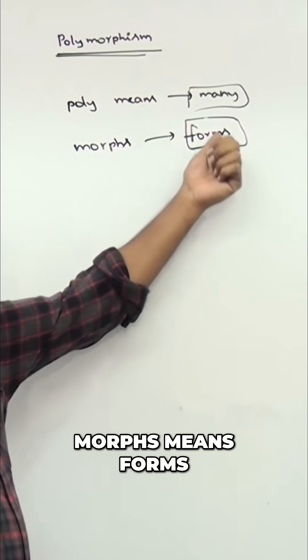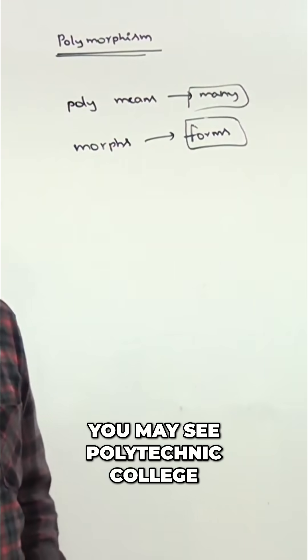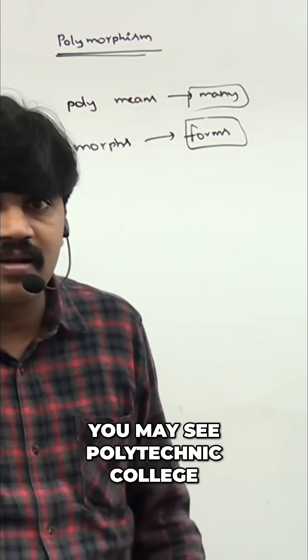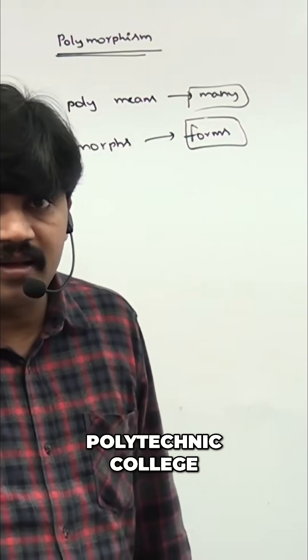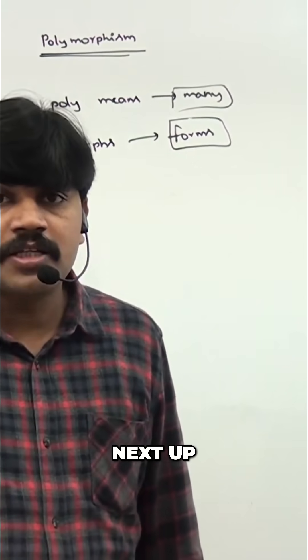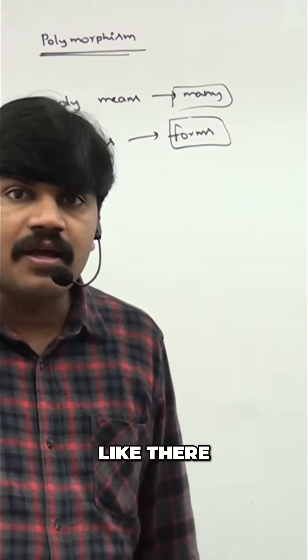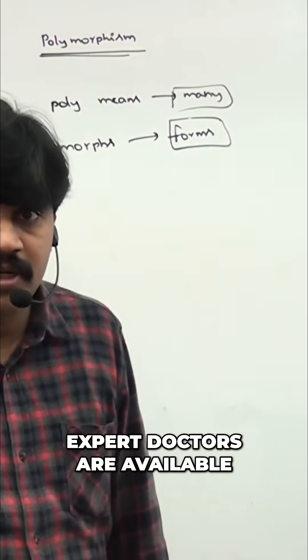Poly means many, morphs means forms. Many forms is called polymorphism. You may see polytechnic college - regarding polytechnic college, there are multiple technologies available. Next, poly clinic - like there are multiple expert doctors available.